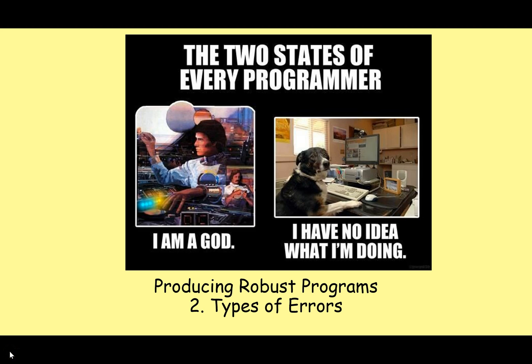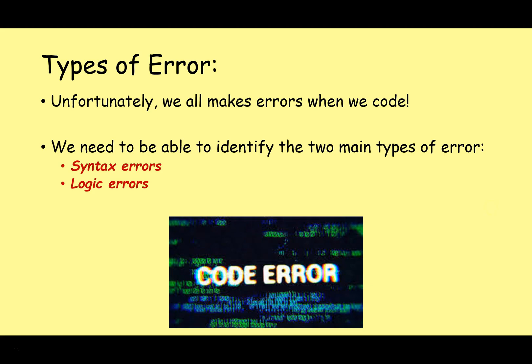Hello and welcome to the next video on producing robust programs. Today we're going to look at types of errors. Unfortunately, we all make errors when we code. If I'm writing a block of code more than say 10 to 12 lines, I'll almost certainly have at least one minor error I need to fix. So we need to be able to identify two main types of error: we've got syntax errors and logic errors.